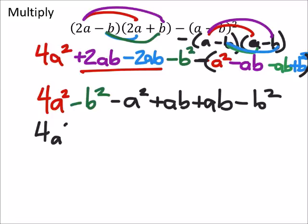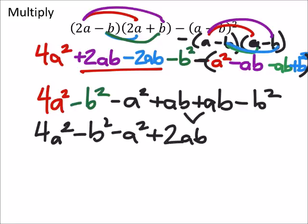Minus b squared. So I've got 4a squared minus b squared minus a squared plus 2ab. So I'm just combining these two. Minus b squared.